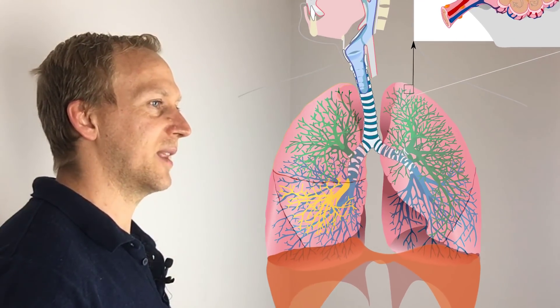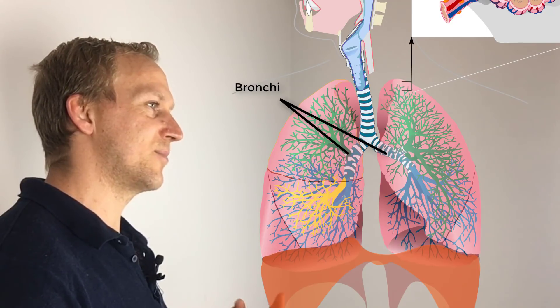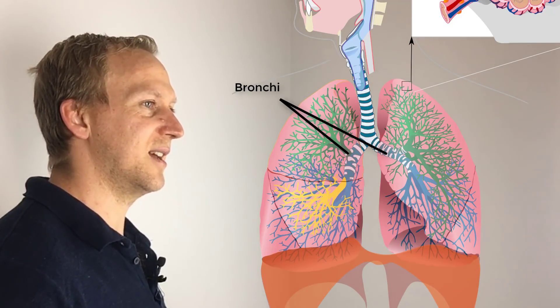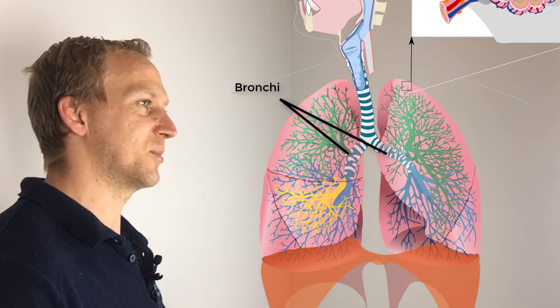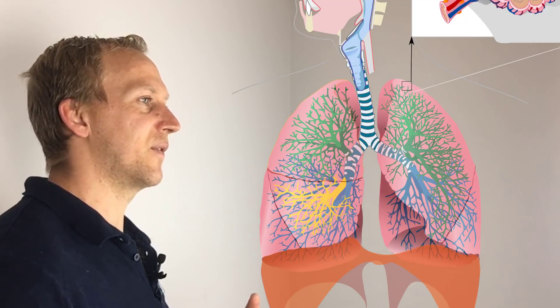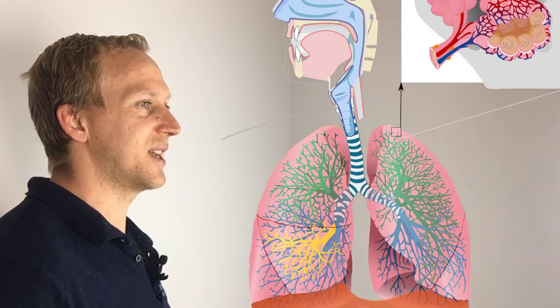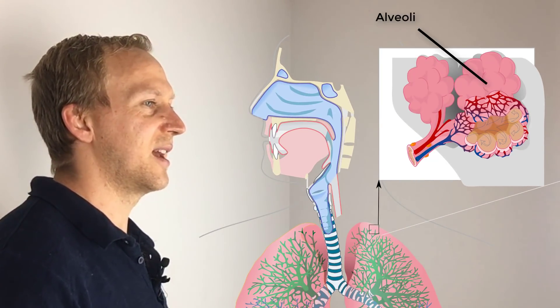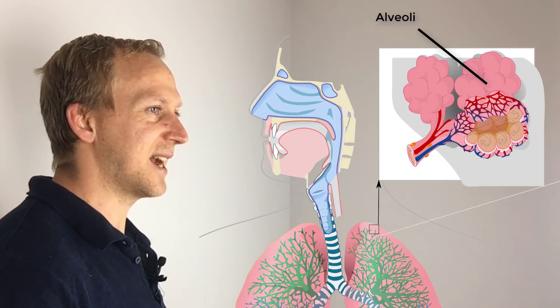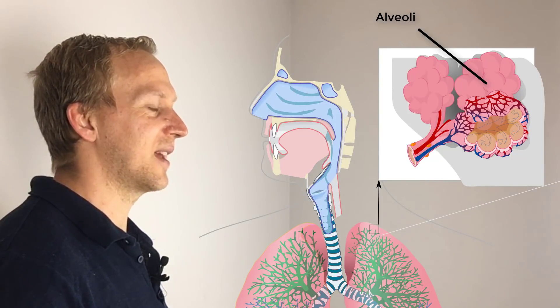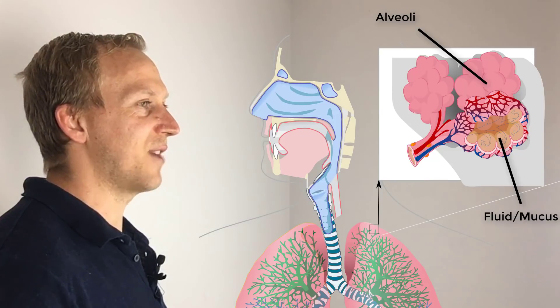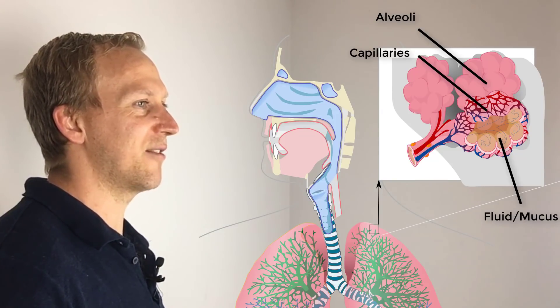You have your bronchi — these are basically branches that split off from the trachea into two pipes going to your left and right lung. These further branch down into bronchioles, and then eventually into alveoli. Alveoli are the porous sacs where gas exchange occurs. They're lined with fluid and surrounded by capillaries, and they greatly increase the surface area within your lungs so that you can absorb lots of oxygen and remove lots of carbon dioxide.